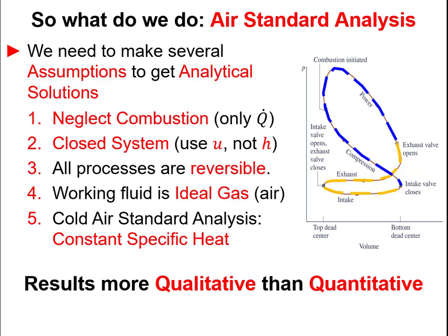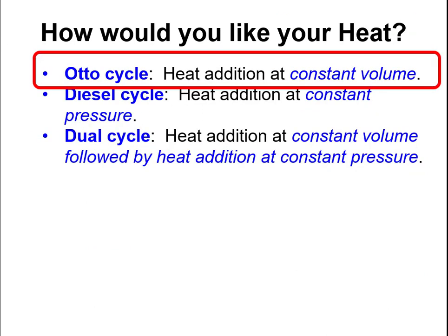Sometimes we'll also assume that specific heat is constant, which is called a cold air standard analysis. Each time we make one of these assumptions we step a little further from reality, which is okay as long as we remember it. The results from this kind of analysis are more qualitative than quantitative, and oftentimes that's what an engineer has to do — design or improve systems with imperfect information.